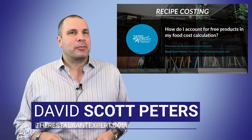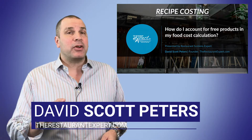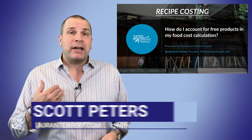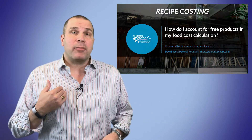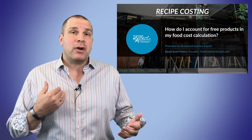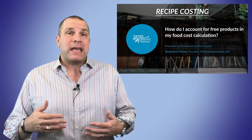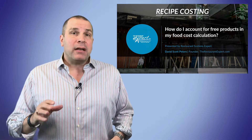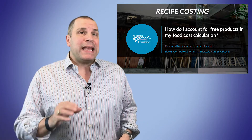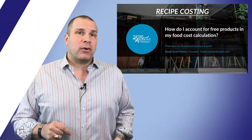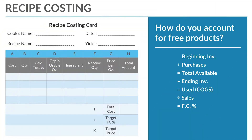This is David Scott Peters with TheRestaurantExpert.com and I feel your pain. I've gotten in trouble for a high pork cost or food cost as we gave away product. What is cost of goods sold? Beginning inventory plus purchases minus ending gives me use — product that leaves the shelves.